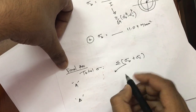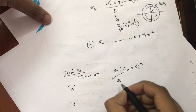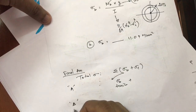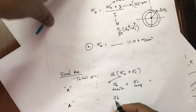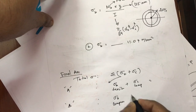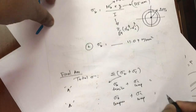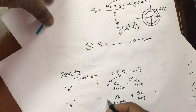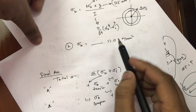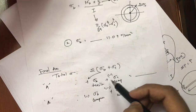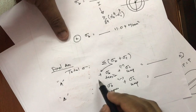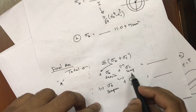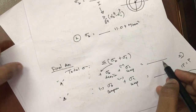At point A, sigma_b is tensile (positive) and sigma_c is compressive (negative). At point B, sigma_b due to bending is compressive (negative) and sigma_c is always compressive (negative). Taking tensile as positive and compression as negative: sigma_b = 11.04 N/mm² and sigma_c = 1.13 N/mm². Substituting the values with the appropriate signs for each point gives the total stress at point A and point B. That's it, thank you.